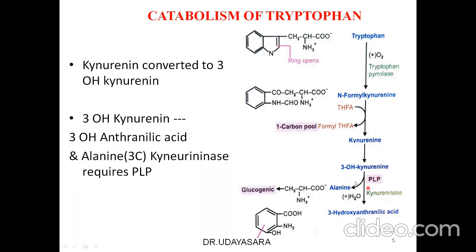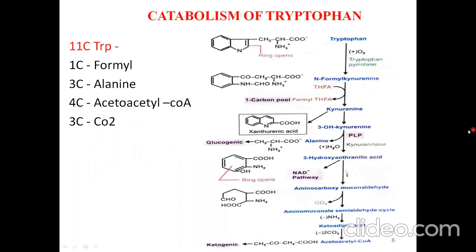In cases of pyridoxal phosphate deficiency, there is accumulation of 3-hydroxykynurenine since it cannot be converted to 3-hydroxyanthranilic acid. To summarize so far: tryptophan → N-formylkynurenine (via tryptophan pyrolase, a dioxygenase) → kynurenine (formyl group donated to THF) → 3-hydroxykynurenine → 3-hydroxyanthranilic acid (kynureninase, PLP-dependent), with alanine also produced.